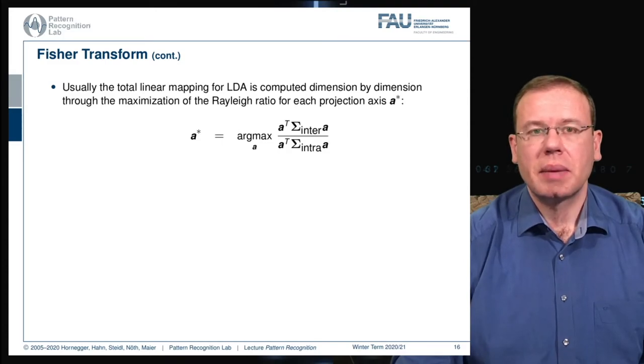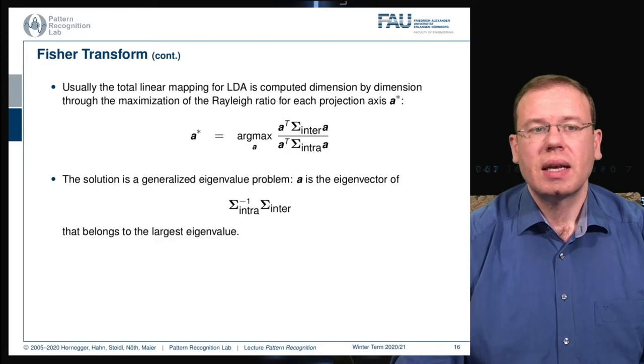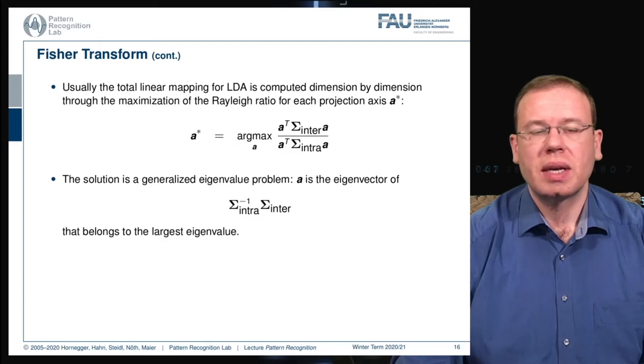Usually the total linear mapping for LDA is computed dimension by dimension through maximization of the Rayleigh ratio for each projection direction a*, where we maximize this for the respective classes and we always take the inter- and intra-scatter matrices. This can also be found by the solution of a generalized eigenvector problem, and A is the eigenvector of the inverse of the intra-class covariance times the inter-class covariance, found as the largest eigenvalue.